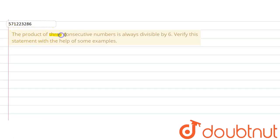The given question says that the product of three consecutive numbers is always divisible by six. We are given this statement and we are asked to verify this statement with the help of some examples.